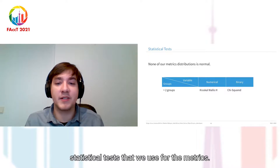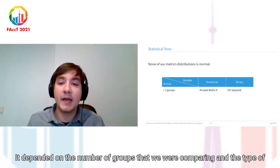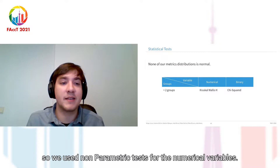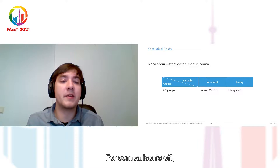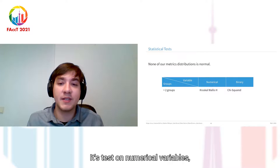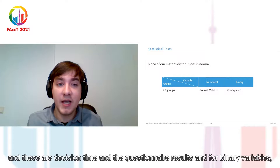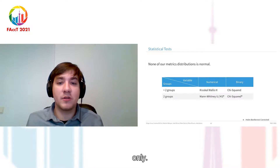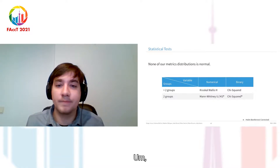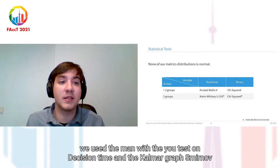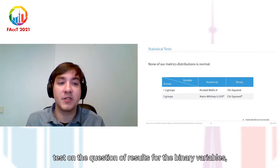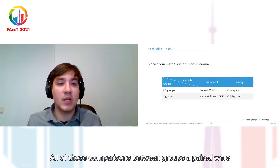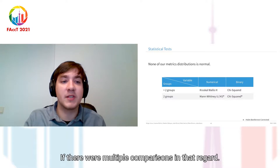For the statistical tests used for the metrics, the choice depended on the number of groups being compared and the type of variable. We observed that none of our variables were normally distributed, so we used non-parametric tests for numerical variables. For comparisons of three or more groups, we used the Kruskal-Wallis test on numerical variables (decision time and questionnaire results), and chi-square for binary variables (accuracy, FPR, and recall). When comparing two variants only, we used the Mann-Whitney U test for decision time, the Kolmogorov-Smirnov test for questionnaire results, and chi-square for binary variables. All paired comparisons with multiple comparisons were corrected accordingly.